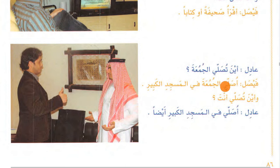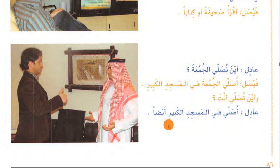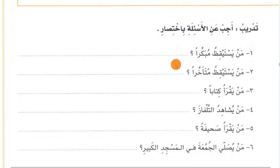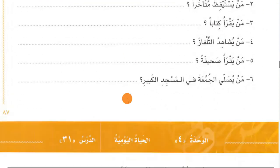أين تصلي الجمعة - where do you pray Jumu'ah? أصلي الجمعة في المسجد الكبير - I pray Jumu'ah in the big mosque. And where do you pray? أنا أيضاً أصلي في المسجد الكبير - I also pray in the big mosque. Then write vocabulary meanings and brief answers to the questions according to the lesson.